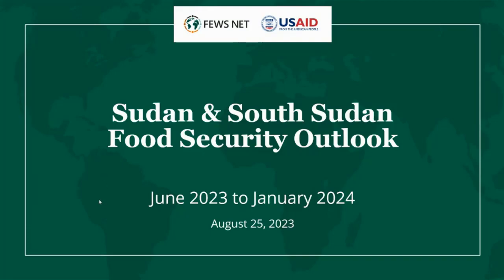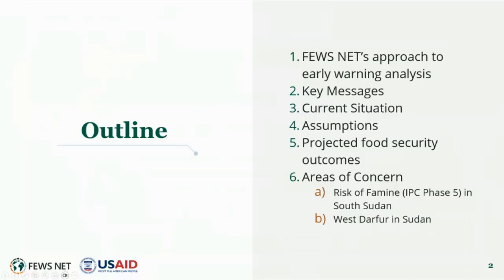In today's briefing, I'll start with a review of the approach to early warning analysis and the Integrated Phase Classification, or IPC 3.1, food security scale for classifying outcomes. I'll then present the seasonal calendar for the region to provide context, followed by a summary of the key messages from our June outlook. For the current situation, I'll be presenting data available into July, noting it did not affect our mapping classifications. I'll then proceed with assumptions leading into our projected outcomes through January 2024 and conclude with slides on areas of concern for each country.